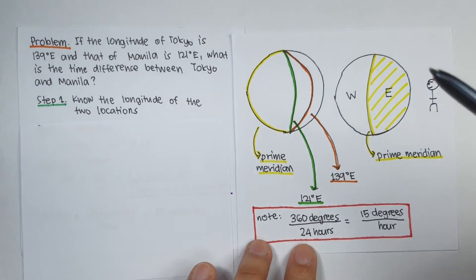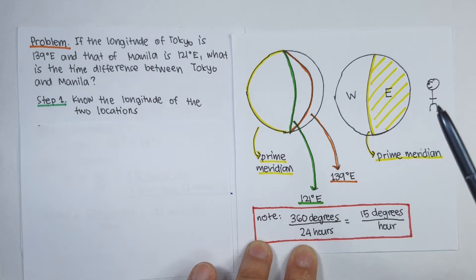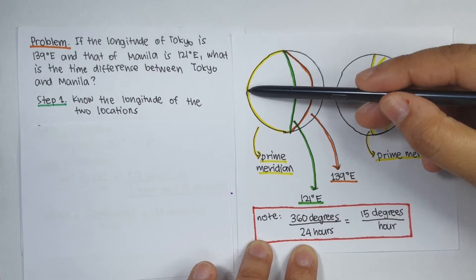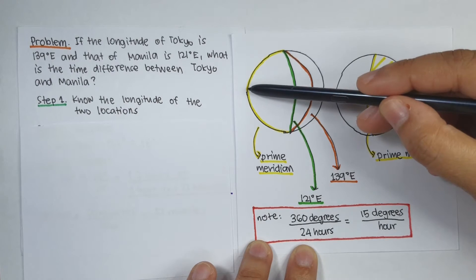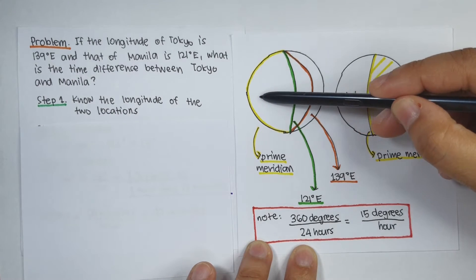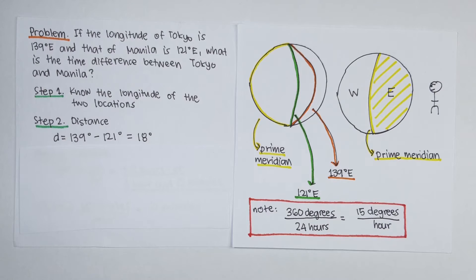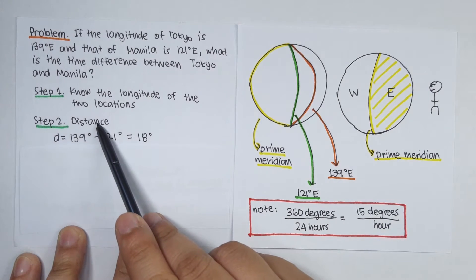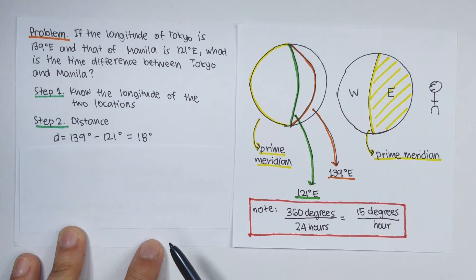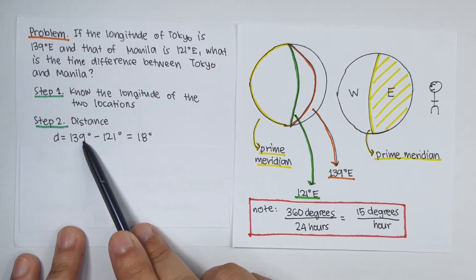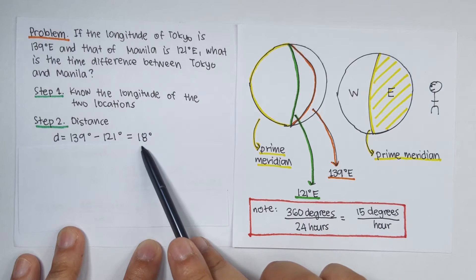Next, if the longitude of Manila is 121 degrees east, meaning from the prime meridian you have to move 121 degrees to the right going east — so over here you have Manila. Step number two is to get their distance apart in terms of longitude. That distance is equal to 139 degrees minus 121 degrees, which equals 18 degrees.